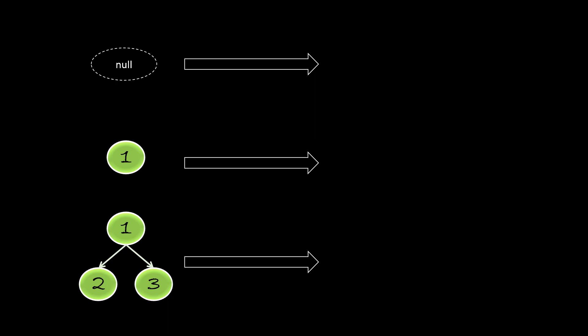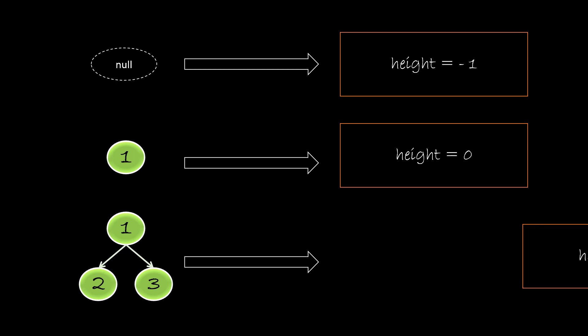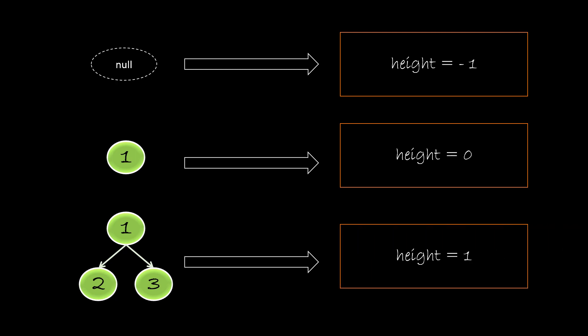Let's calculate the height of these trees. If the tree is null, the height is said to be minus 1. While for just the root node, the height is given as 0, as it is the zeroth level. For the rest, we can use the formula. So the height of a tree with 3 nodes is 1. Remember, the height of a tree is given by the number of edges between the root and the deepest leaf node, and not the number of nodes between the root and the deepest leaf.